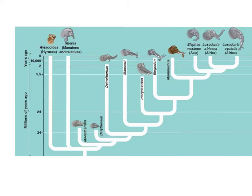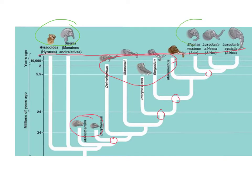You can see various nodes — branching points where things have diverged. Anything that has not made it to the top line is extinct. Those along the top are still-existing, modern-day organisms: elephants, manatees, and hyraxes.